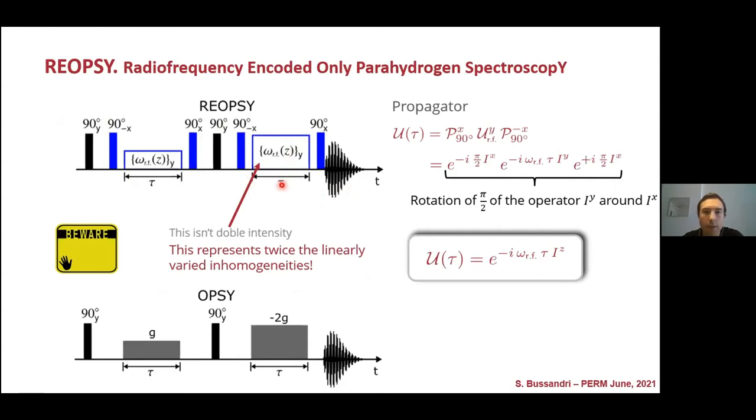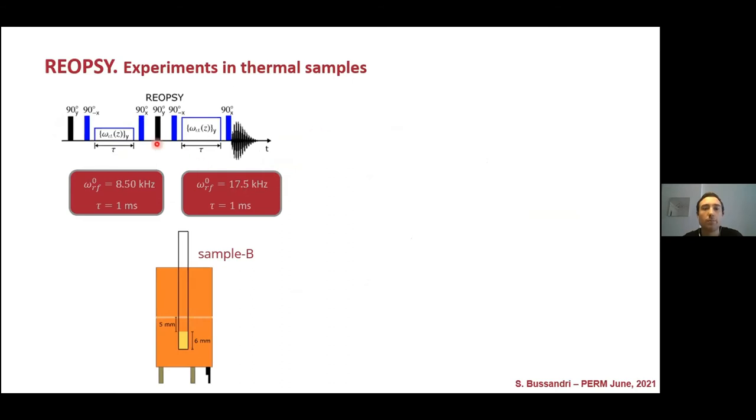So we tested this new sequence in three different thermal samples. We applied two RF blocks with one millisecond of length. All these thermal samples were put in sample B configurations. We tested it in water, which is a non-interacting spin system. You can see that compared with the spectra obtained after a single pulse, the RE-OPSY actually filters almost all the thermal signal.